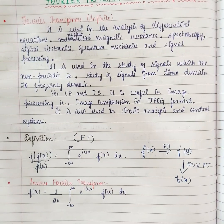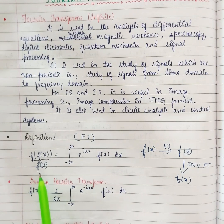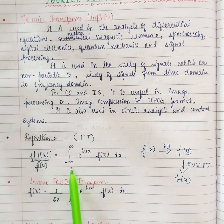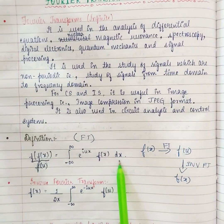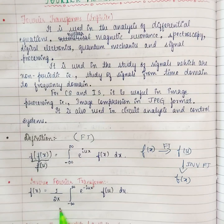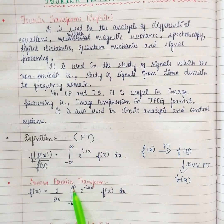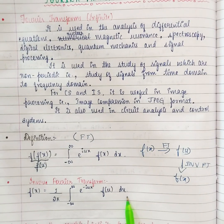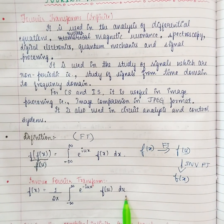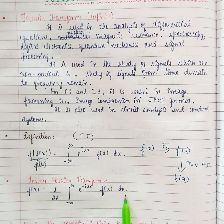Hi. So far we have seen problems in Fourier transform and inverse Fourier transform. Just a small recap: the formula is f of u is equal to integral minus infinity to infinity e power iu x f of x dx. And the formula for inverse Fourier transform is 1 by 2 pi integral minus infinity to infinity e power minus iu x f of u du. There is a small change in the formula when it comes to Fourier cosine transform as well as Fourier sine transform.